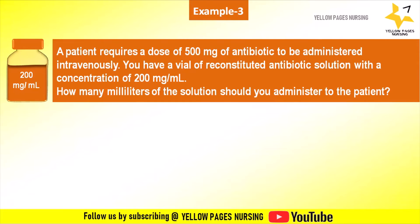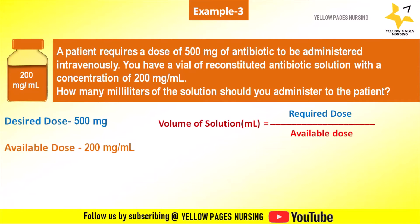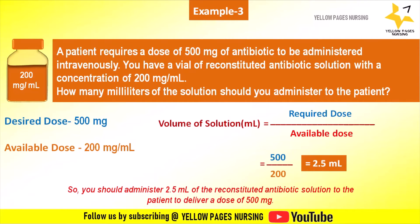The third example: a patient requires a dose of 500 milligram of antibiotic to be administered intravenously. You have a vial of reconstituted antibiotic solution with a concentration of 200 milligram per ml. How many milliliters of the solution should you administer to the patient? The formula is: volume of solution (ml) = desired dose divided by available dose. Here the desired dose is 500 milligram and available dose is 200 milligram per ml, giving the answer 2.5 ml.